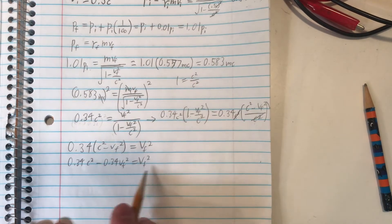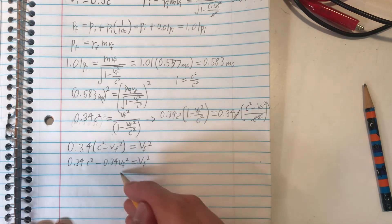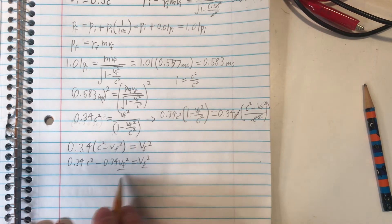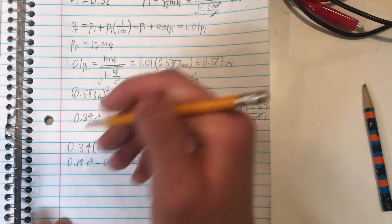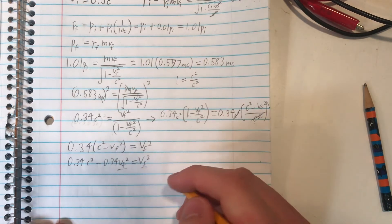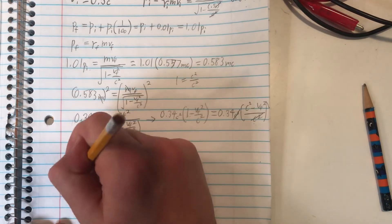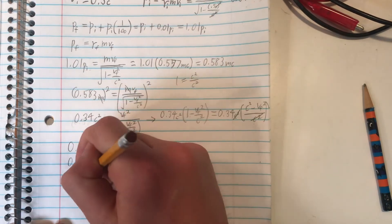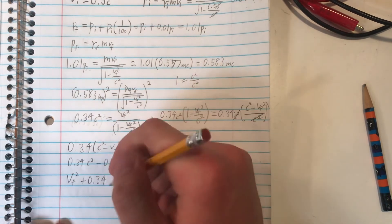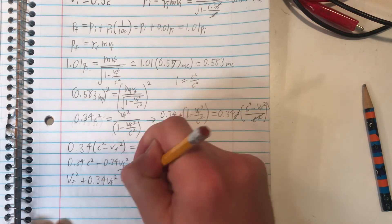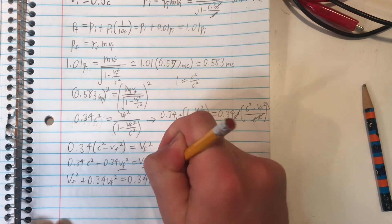And now we can add both sides. We want to get these two vf squared terms together. So because there's a minus sign here, let's add 0.34 vf squared to both sides. So that will be, I'll write it like this to make it easier to understand. So that's vf squared plus 0.34 vf squared equals 0.34 c squared.